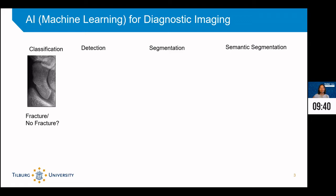For example, here we have an image of a scaphoid, and we're trying to classify whether the scaphoid is fractured or not. And the answer is yes — it's fractured right over here.